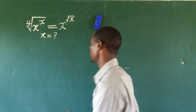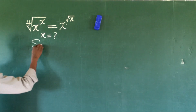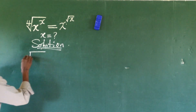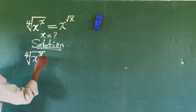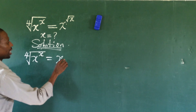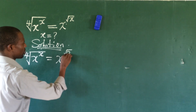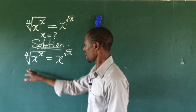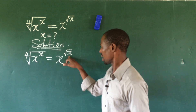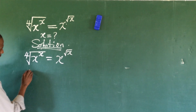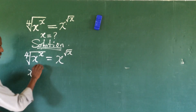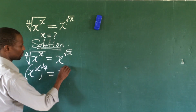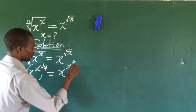Without much waste of time, let's put down our solution. We write down the question: the fourth root of x to the power of x, equal to x to the power of the square root of x. These are two different radicals, so we rewrite them. This gives us x to the power of x to the power of 1 over 4, equal to x to the power of x to the power of 1 over 2.